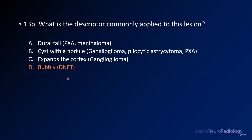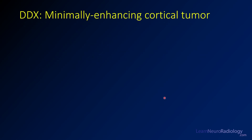The descriptor associated with DNET is that it's bubbly. Gangliogliomas are known for expanding the cortex. Here are a couple of lesions known for being a cyst with a nodule: ganglioglioma, pilocytic astrocytoma, and PXA. Dural tails are really associated with PXAs and meningiomas.